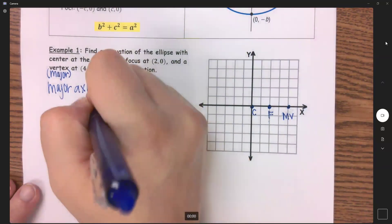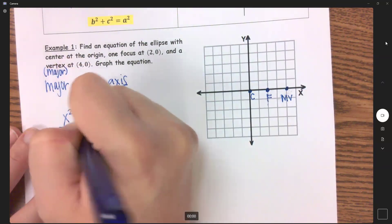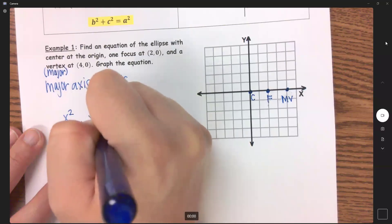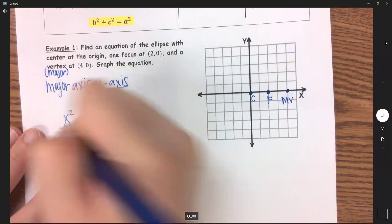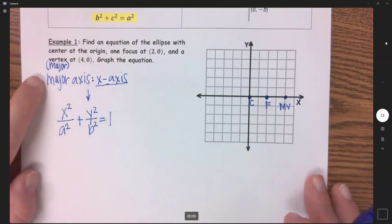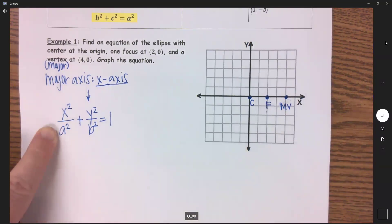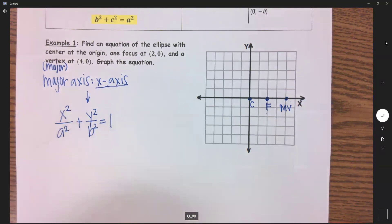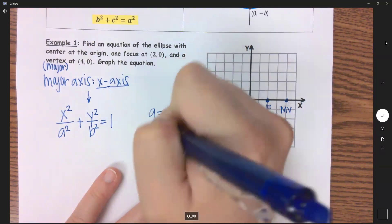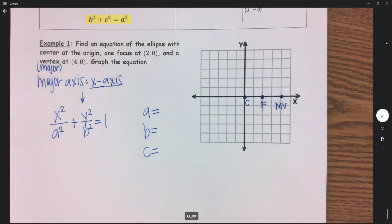So then that tells me that I'm using this version of my formula, x squared over a squared plus y squared over b squared equals 1. Once I've labeled what my major axis is, and then figured out what version of my formula I am using, now I need to find my A, B, and C. You will always be given two of them. We'll have to find the third one.